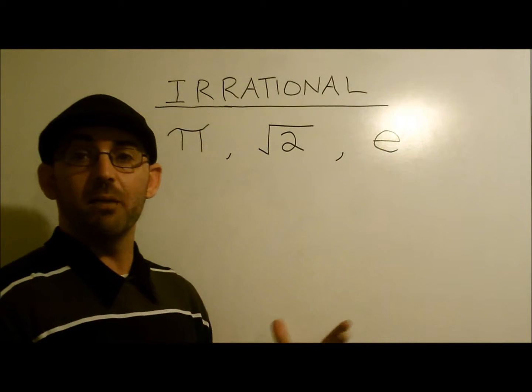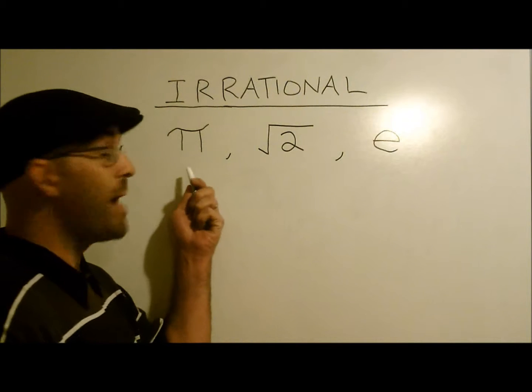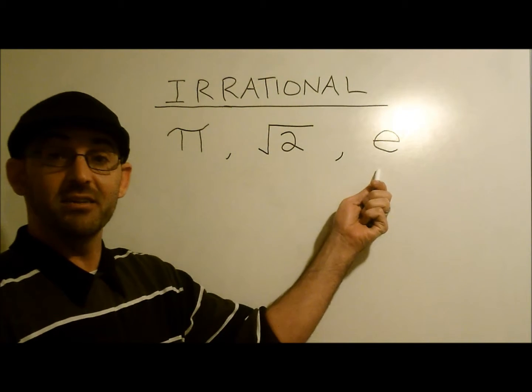Irrational numbers are numbers that cannot be represented by a fraction. Numbers such as pi, the square root of 2, and the banker's constant, e.